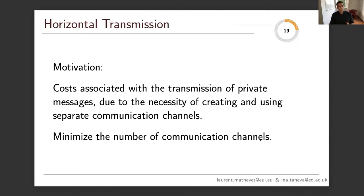The first thing we do in the paper is characterize the set of implementable outcomes coming from horizontal or vertical transmission. There are costs associated with the transmission of private messages due to the necessity of creating and using separate communication channels. From my perspective in this seminar, there is just one communication channel even though I am speaking to about 50 people. If I was talking to each of you individually and in private, there would be 46 separate communication channels. This seminar — horizontal transmission — uses one communication channel, minimizing the number of channels.